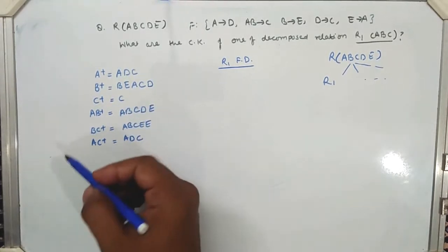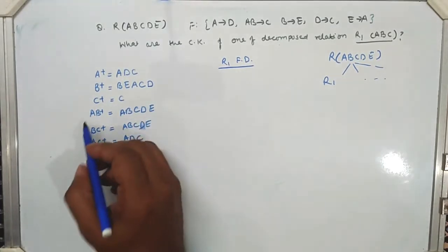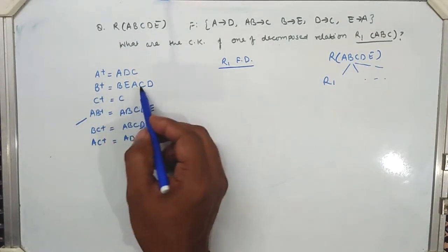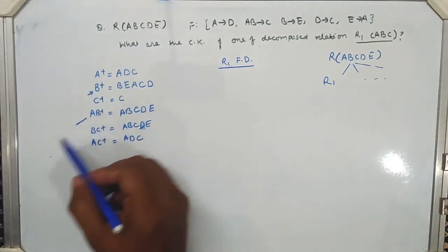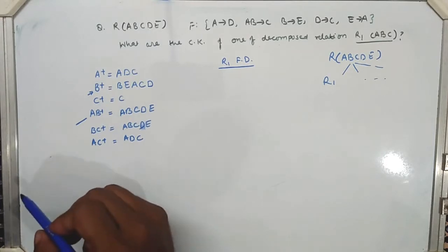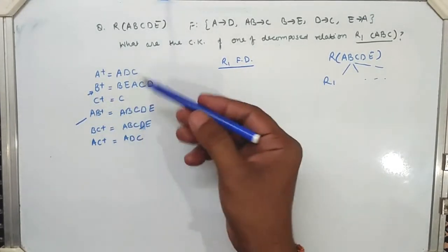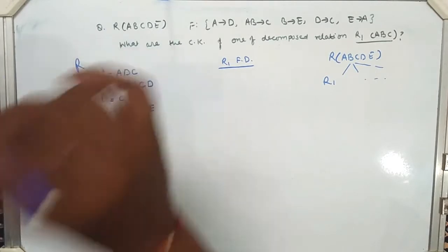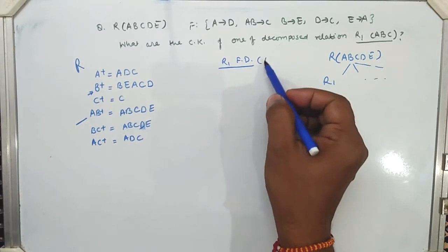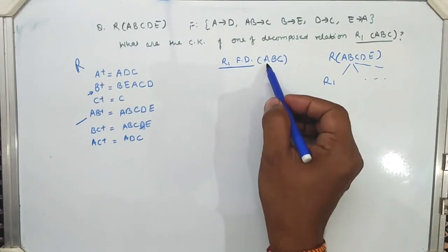From this I can say that B is a candidate key because B+ can uniquely determine all attributes. AB and BC are super keys. But we are not interested in finding the candidate key for the whole relation R — we are interested in finding the functional dependencies specific to the decomposed relation R1.